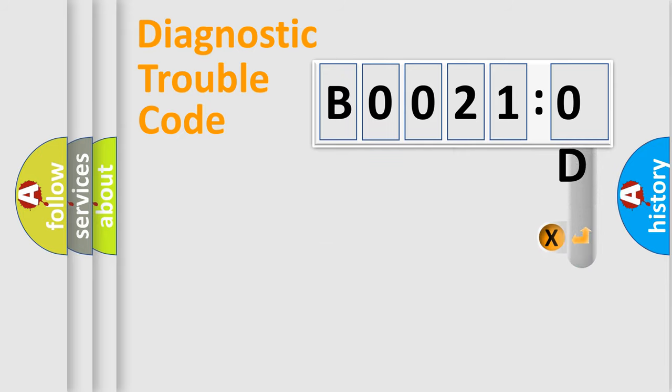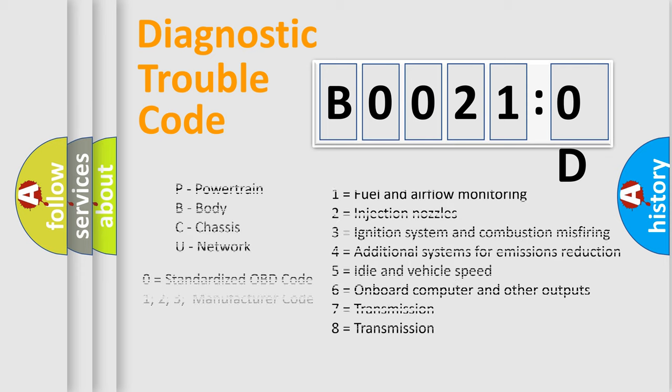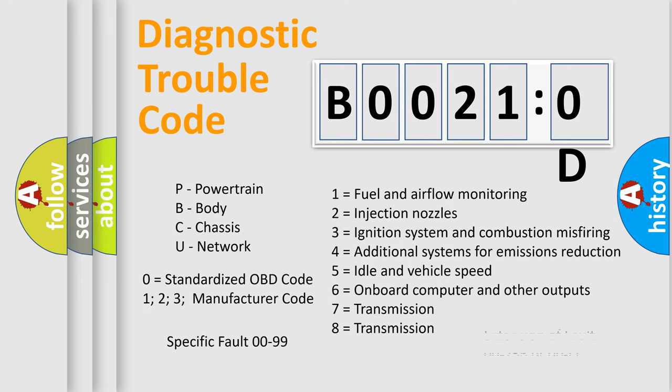The add-on to the error code serves to specify the status in more detail, for example, a short to the ground. Let's not forget that such a division is valid only if the second character code is expressed by the number zero.